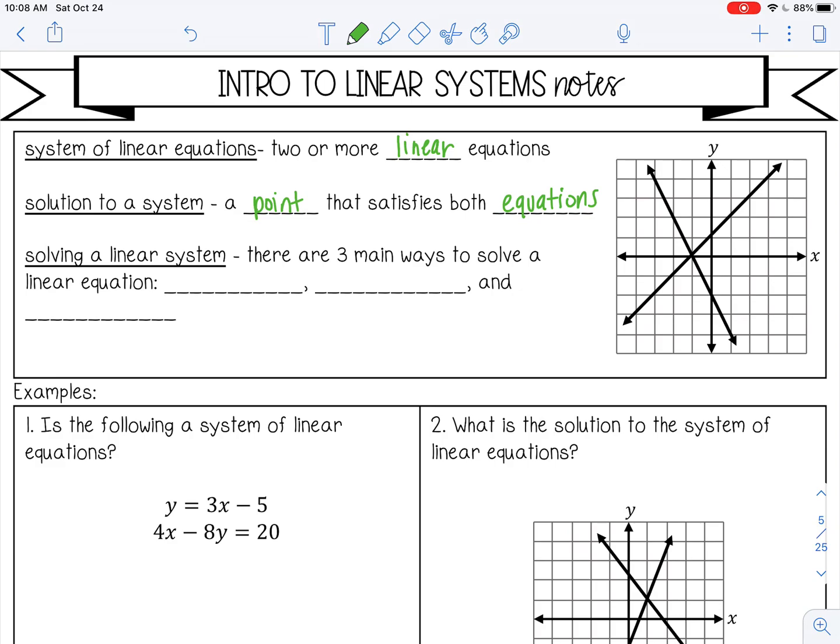You can see an example of a system of linear equations on the right. These are two graphed linear equations and graphically the solution is where they meet, so the solution to this one would be negative one, zero. There are three main ways to solve a linear system, and you just learned one: graphing. You can graph and see where the two lines meet. There's also